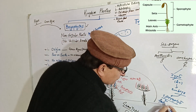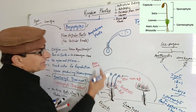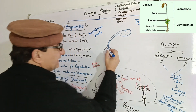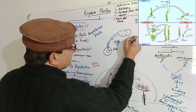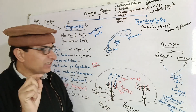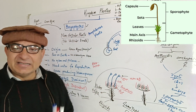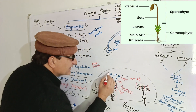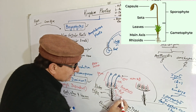A sporophyte consists of only three parts: foot, seta, and capsule (sporogonium). The seta is the stalk part. The sporophyte generation is totally dependent on the underlying gametophyte and it gets nourishment from it. Sporophyte generation is meant for production of spores, which it produces as a result of meiosis.